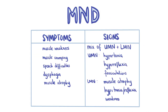Patients usually present with muscle weakness and cramping, often asymmetrical initially, and affecting the hand or the upper limb. As the disease progresses, patients develop dysarthria, dysphagia, dysphonia, and muscle wasting.